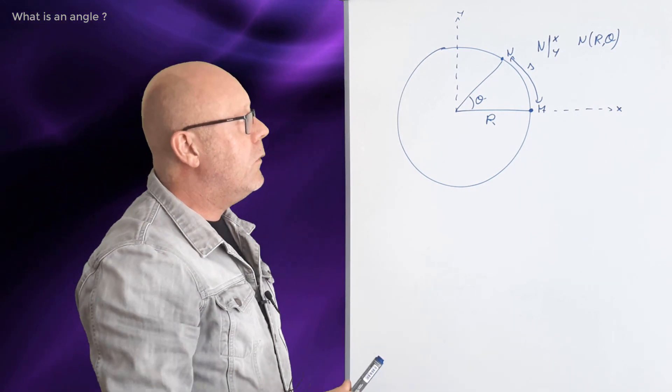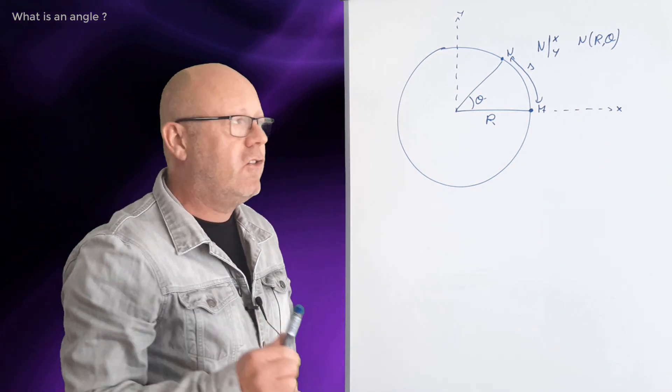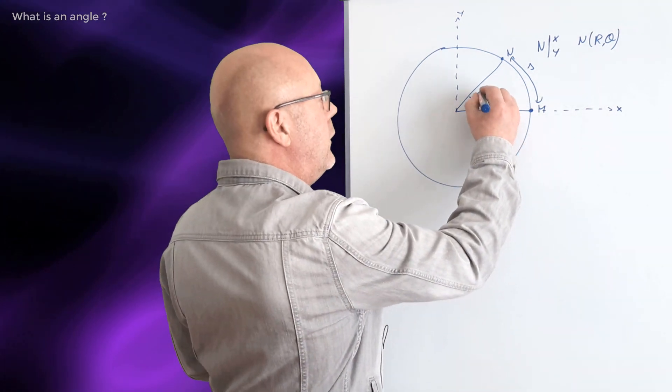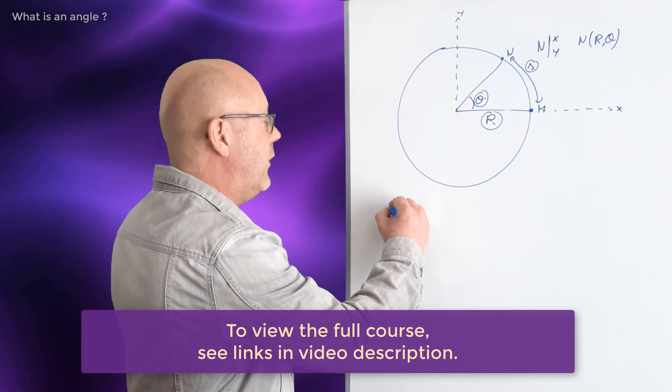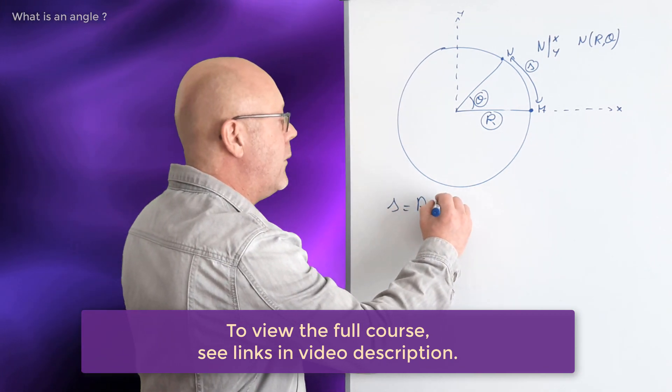OK. So let's see the relationship we have between r, theta and s. This relationship is actually s equals r multiplied by theta.